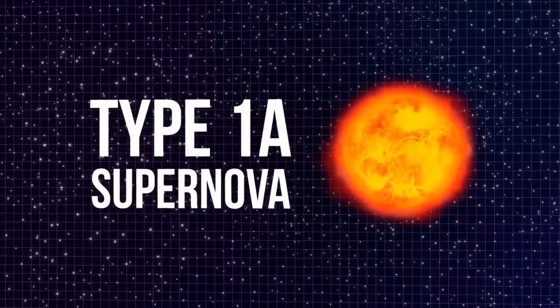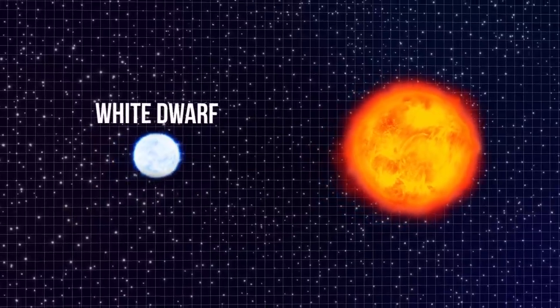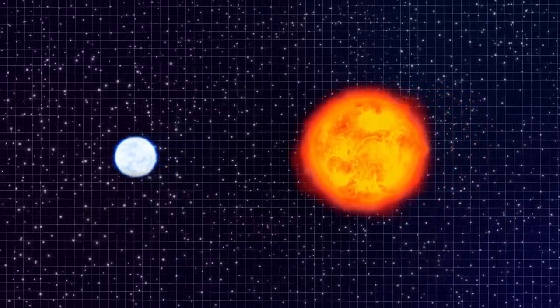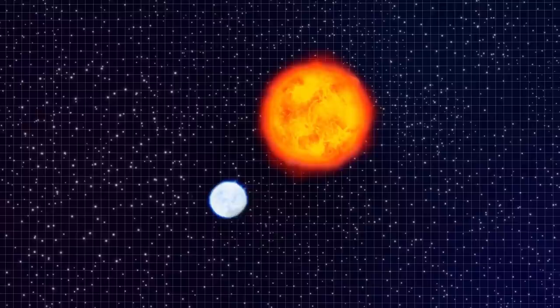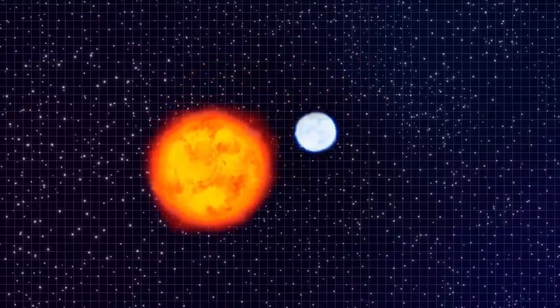Type 1a supernova are caused by a white dwarf in a close binary system, which means there are two stars or objects in the system, and they're close to each other.